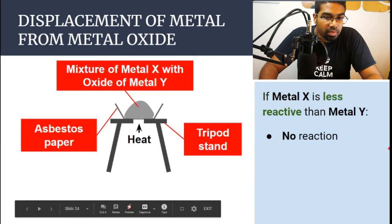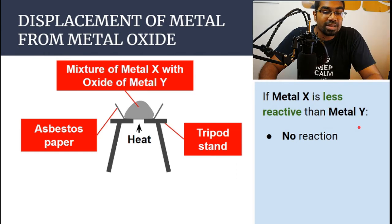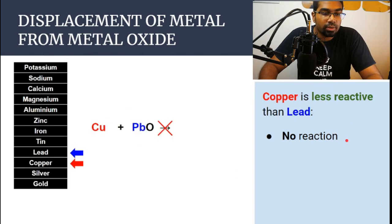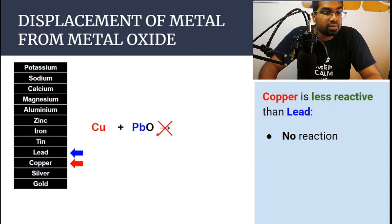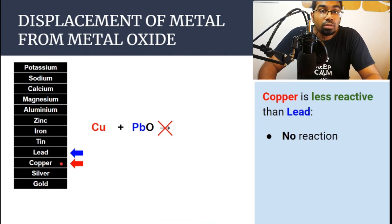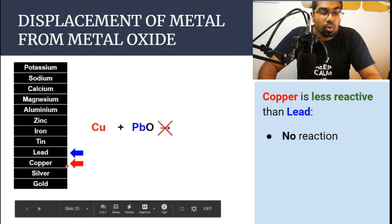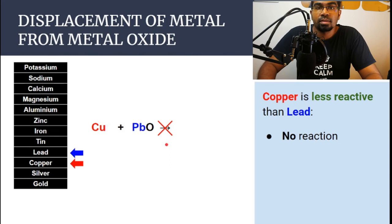Let's look at another case — where metal X is less reactive than metal Y. If the metal in the elemental state is less reactive than the metal in the oxide, there will be no reaction. For example, if we have copper and lead oxide, we refer to the reactivity series: lead is above copper, which means lead is more reactive than copper. Since copper is less reactive than lead, copper will not be able to displace lead out of lead oxide. So we will not observe any reaction — there is nothing to observe.